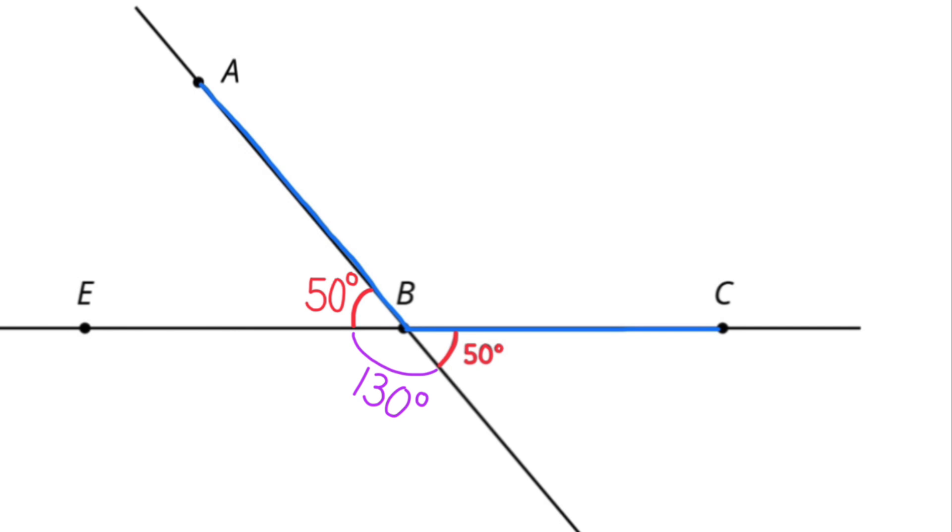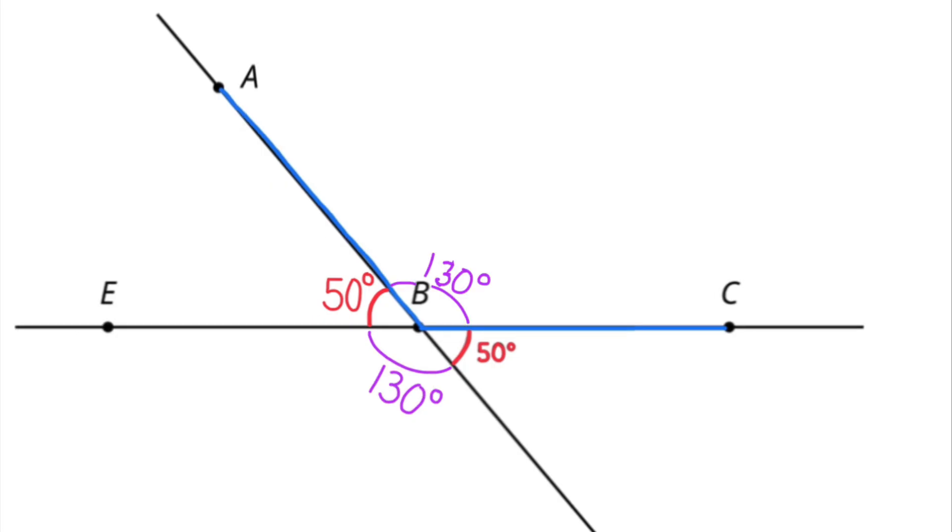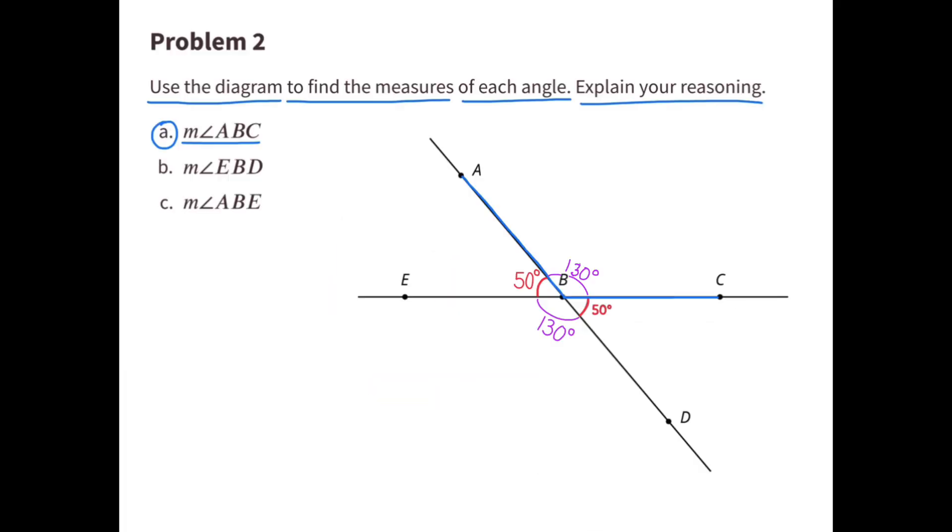Angle EBC will total 180 degrees and I know that angle ABE is 50 degrees. So the remainder is 130 degrees. Angle ABC measures 130 degrees.